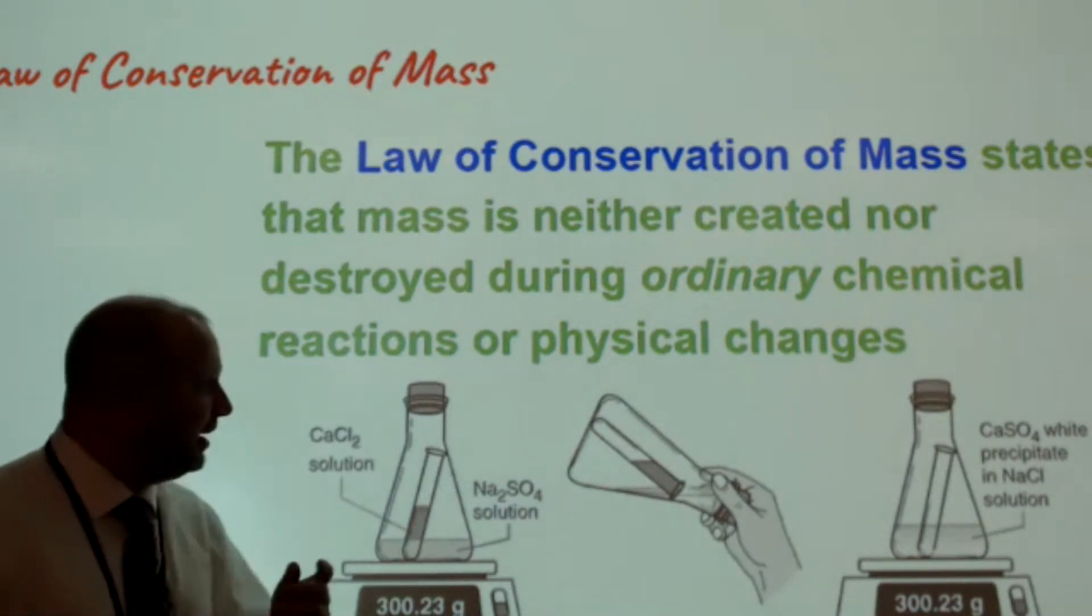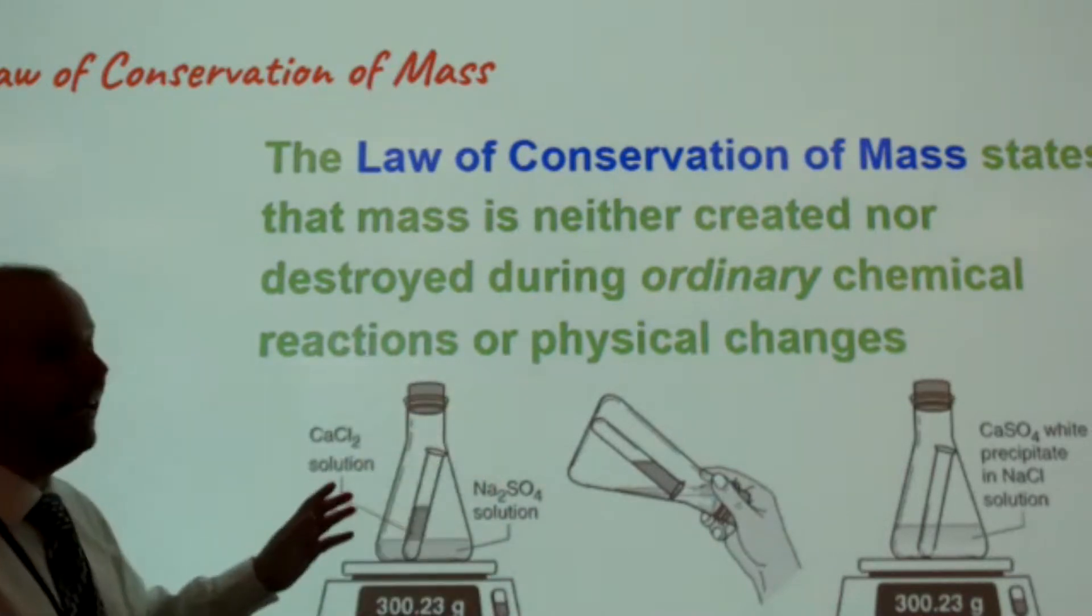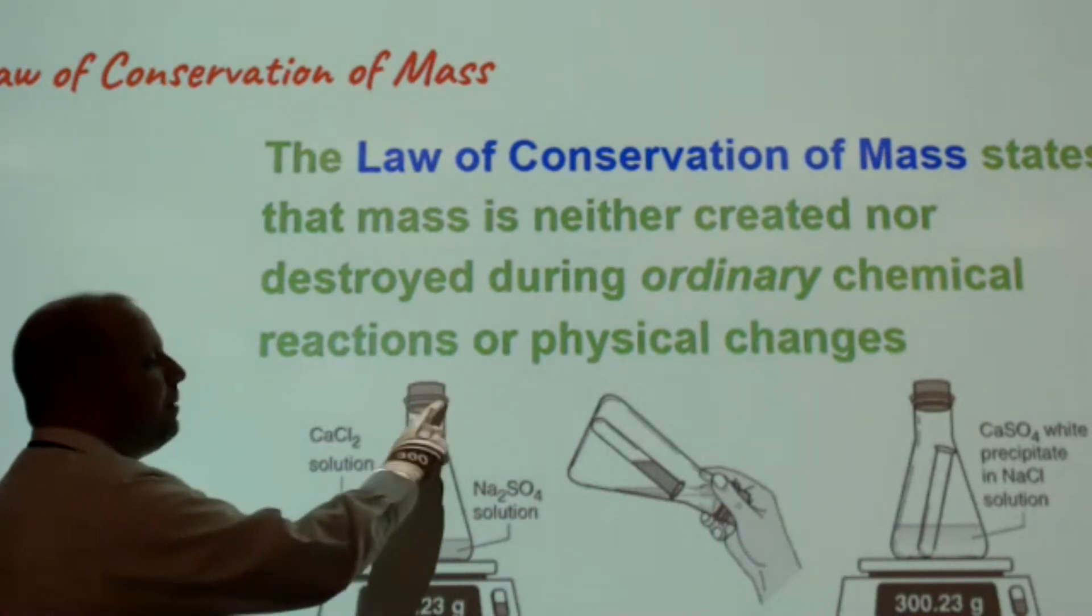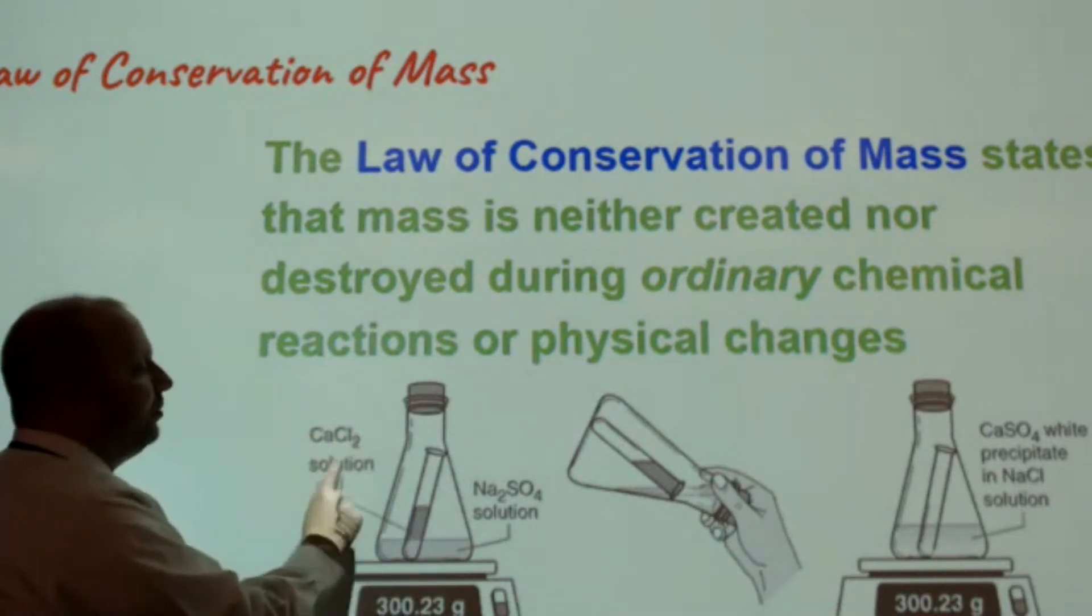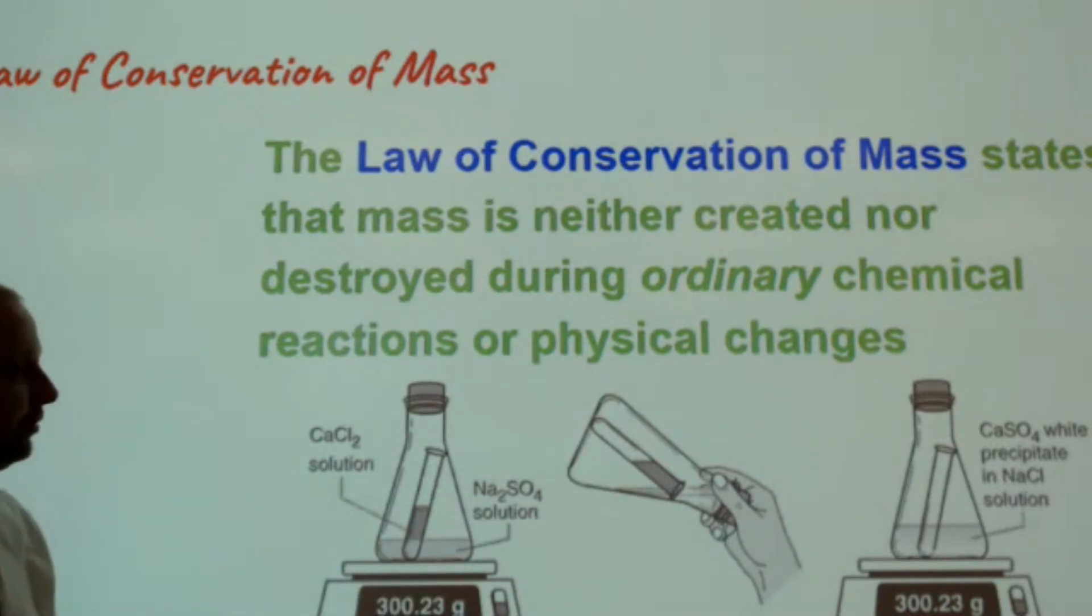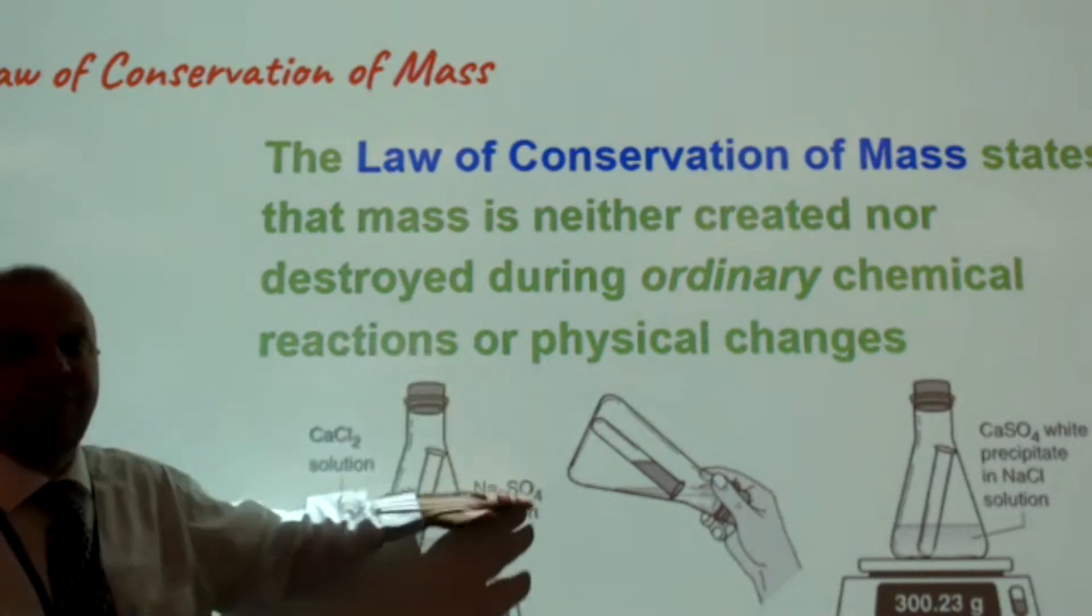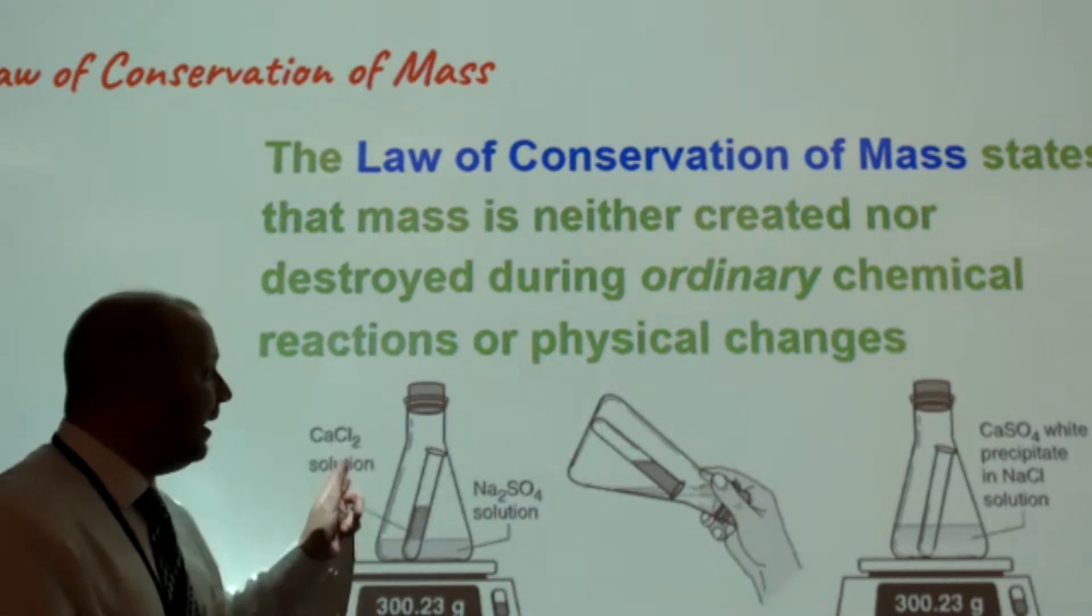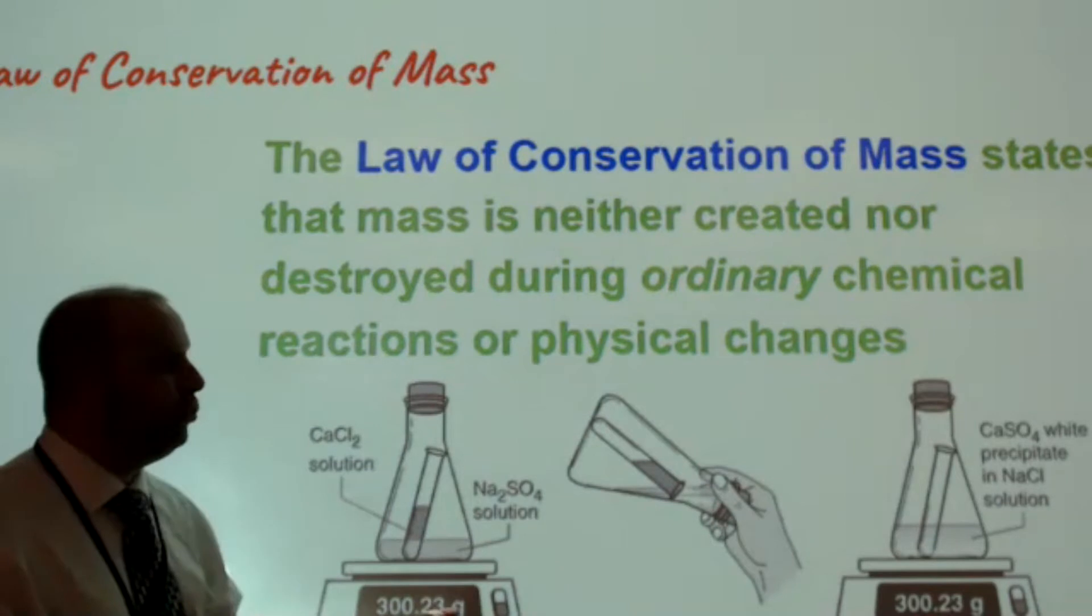So what this means is this. If you look at this diagram that's down here, you have a sealed off container. Inside of the container, this is an Erlenmeyer flask by the way, that has a rubber stopper on the top. Inside of the container there's a test tube, and inside of that test tube there's a calcium chloride solution. Down here, sitting in the bottom of the Erlenmeyer flask, there's a solution of sodium sulfate. The entire system is sitting on top of a balance, and the purpose is so that you can see that the mass of all of this turns out to be 300.23 grams.